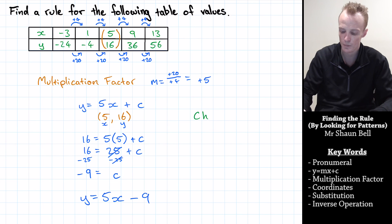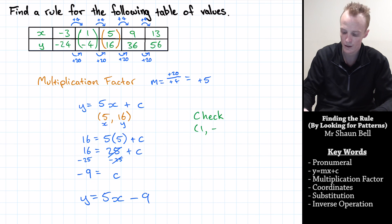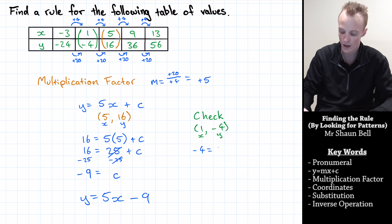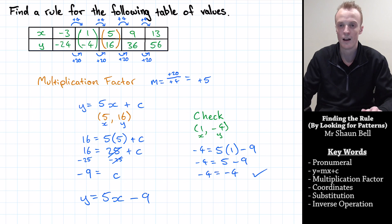We can verify by choosing another set of coordinates — I'll choose (1, negative 4), where 1 is the x coordinate and negative 4 is the y coordinate. Substituting in: negative 4 should equal 5 times 1 subtract 9. That gives 5 subtract 9, which equals negative 4. Therefore, we've found the correct rule.